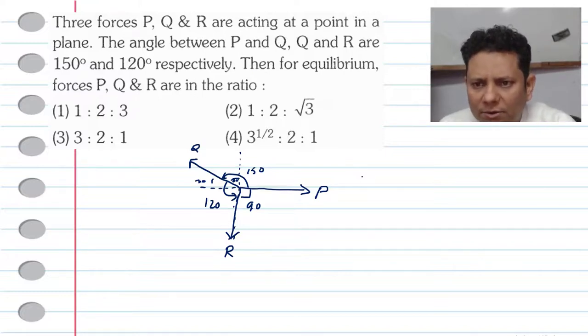So applying the Lami's theorem, we can write P divided by sine of 120 degree, which is the opposite angle, will be equal to Q divided by sine of 90, will be equal to R divided by sine of 150 degree.